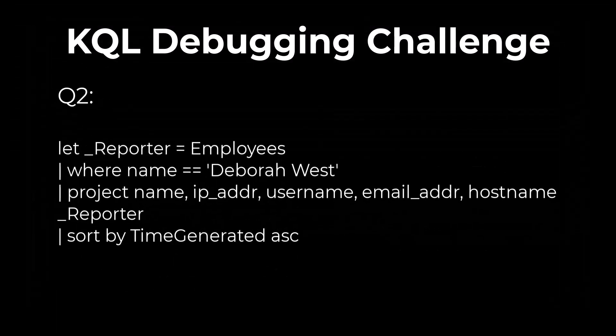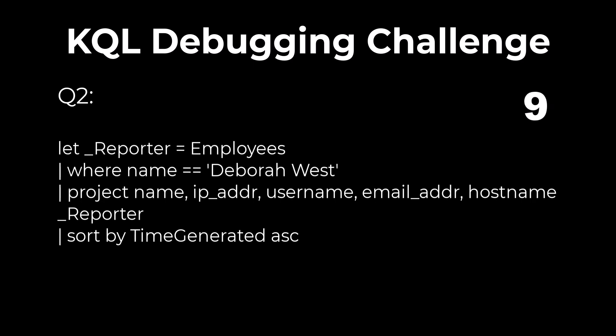Question 2. Identify two bugs in this query. The first bug is that the let statement doesn't end with a semicolon and it can't be used. The second bug is that the project statement narrows the output down to five available fields, and the sort by statement is attempting to sort by a field not present in that group of five, which will cause an error.